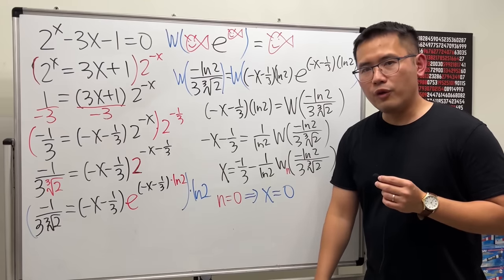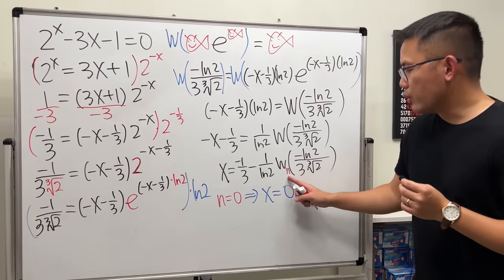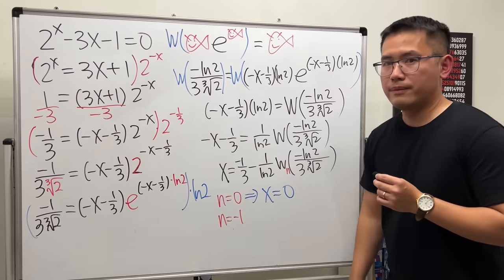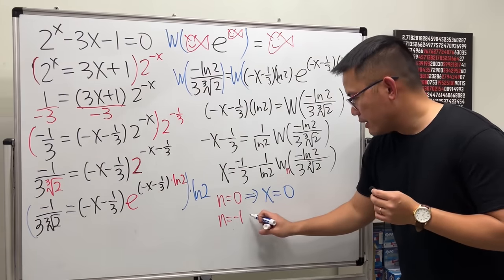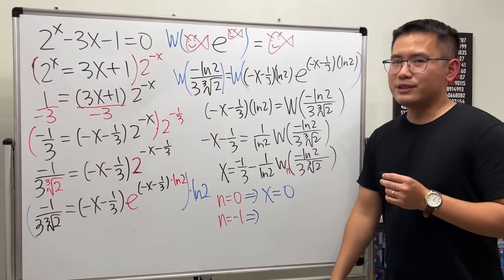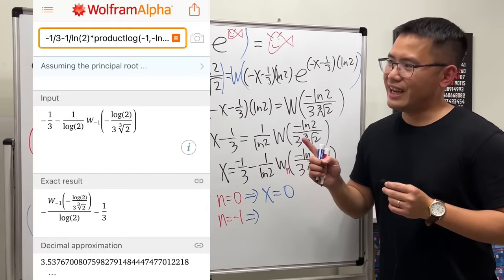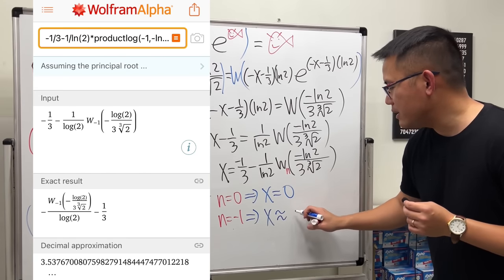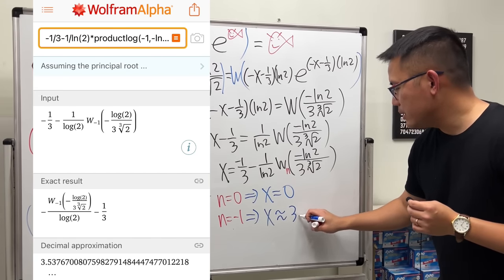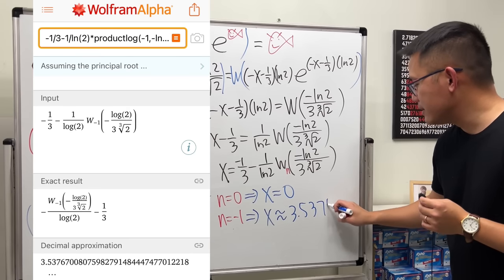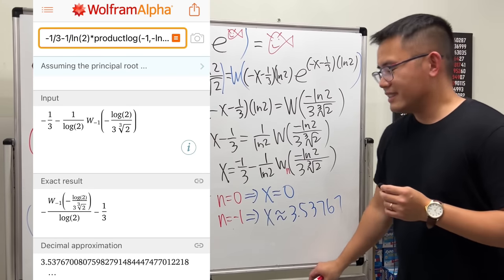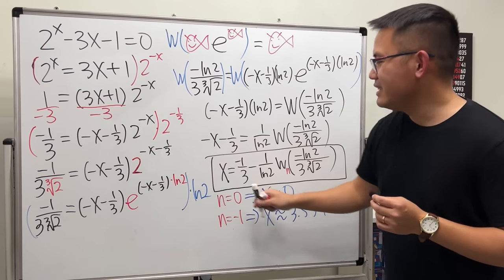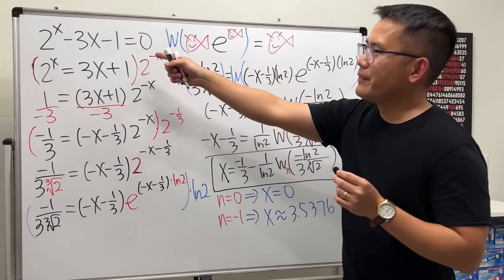To get the other real solution, use the n = −1 branch. Setting n = −1 in Wolfram Alpha, we get x ≈ 3.53767. That is the second answer for this equation.